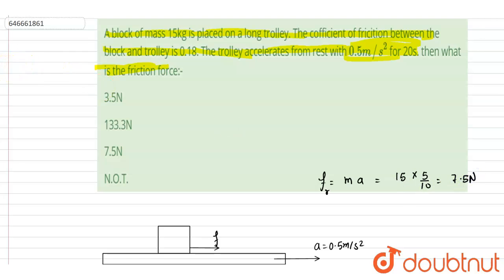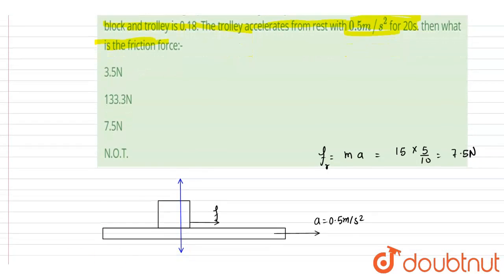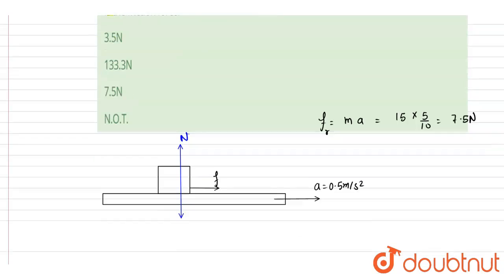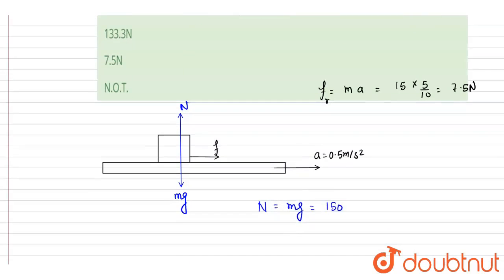So as you got this right, let's check the limiting friction now. Now here, the forces that will act in vertical direction are the normal reaction N and mg. So the net force in vertical direction will be 0. So mg is 150 newton, right?